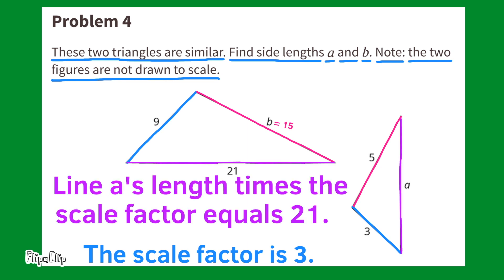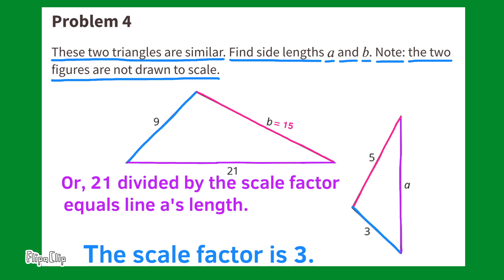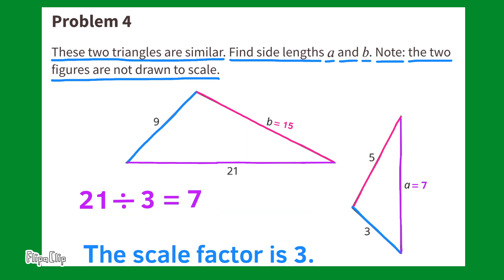Line A's length times the scale factor equals 21, or 21 divided by the scale factor equals line A's length. 21 divided by three equals seven. So the missing length for A is seven.